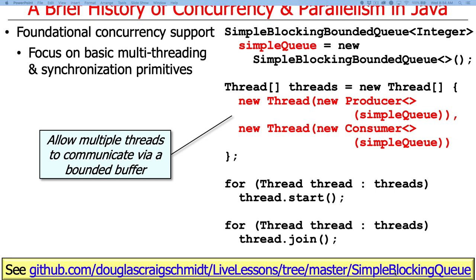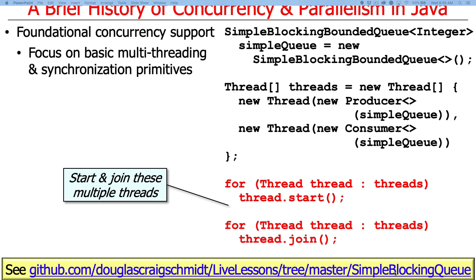We then spawn two threads: one is a producer thread, generating messages and sticking them onto the queue; the other is a consumer thread, pulling messages off the queue that were put there by the producer. As you can see, we make two new threads — one running the producer logic, one running the consumer logic — and they both share the queue. After creating the two threads, we march through an array with two elements and start each thread. 'Start' basically means set the wheels in motion so that the operations can run concurrently.